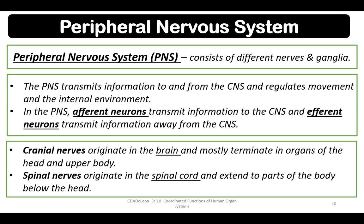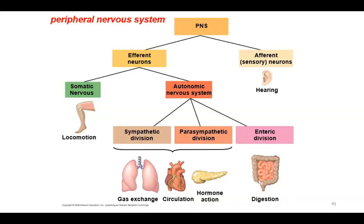Cranial nerves originate in the brain and mostly terminate in organs of the head and upper body, while spinal nerves originate in the spinal cord and extend to parts of the body below the head.